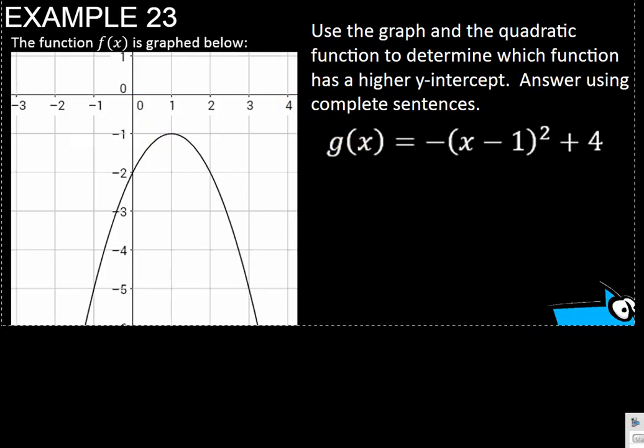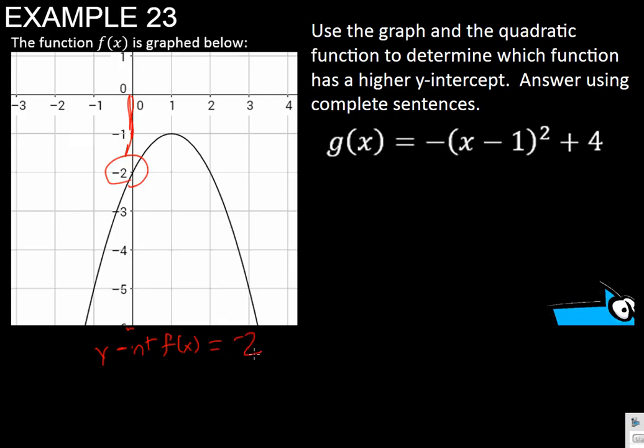For this example, we need to figure out which function has a higher y-intercept. We're going to look at the intercept for the graph, since that's the easiest one to find. Here's my y-axis. It crosses at negative 2. So the y-intercept for f of x is negative 2.